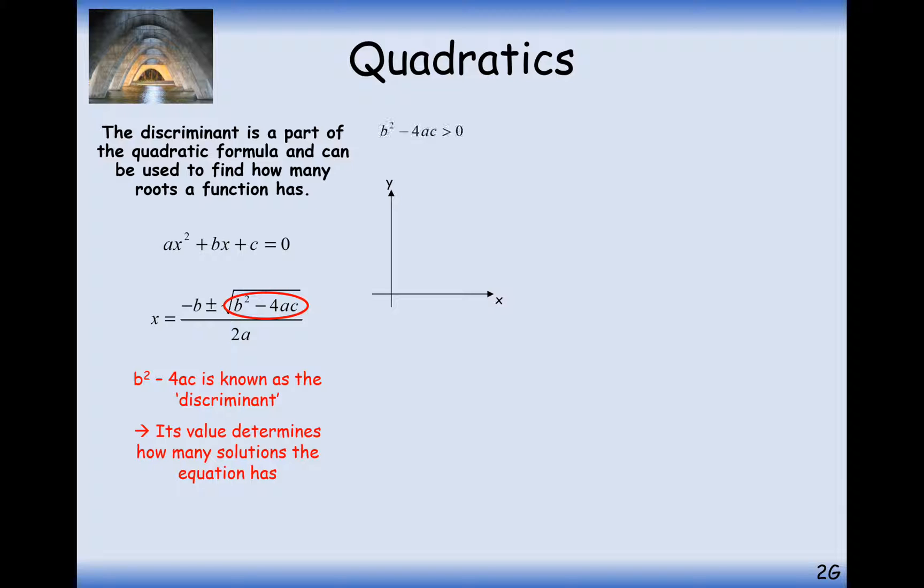If the discriminant is bigger than 0, then the value inside that square root is bigger than 0. So therefore, when you square root it, you're going to be adding on or subtracting some value. That will then change the value of x from the value minus b. So you're going to get two solutions in that case.